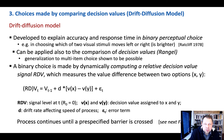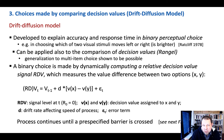You then have the values of each item and can look at how participants choose between two items, applying the drift-diffusion model to economic choices. This is what the work by Ian Krajbich and Antoni Rangel has done.